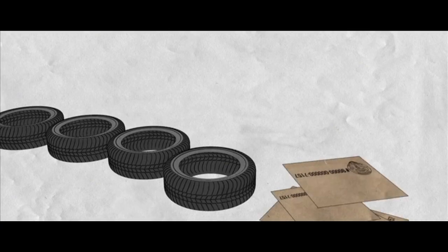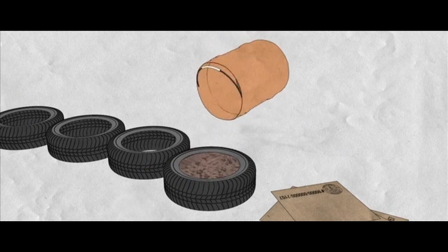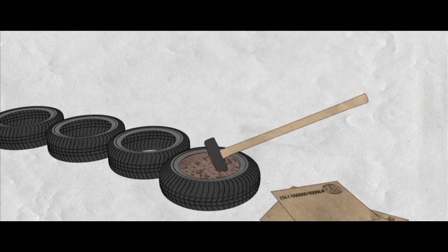Tire pounding. You start by placing cardboard inside the tire, then you fill it up with dirt, and you pound it until the tire bulges.